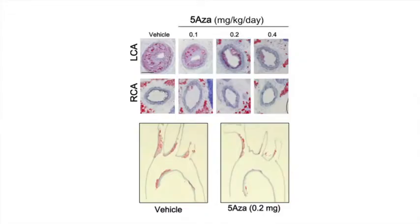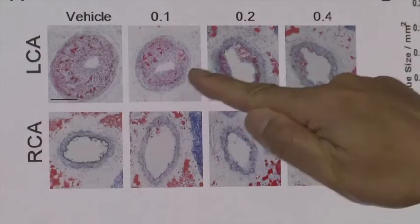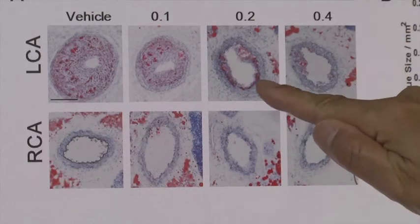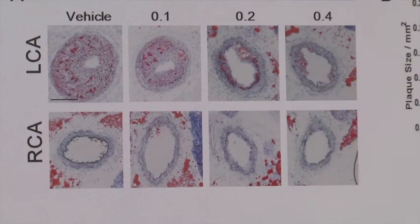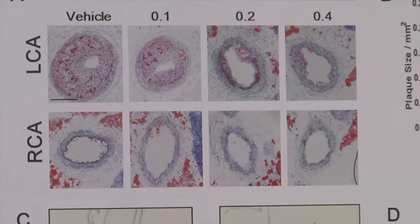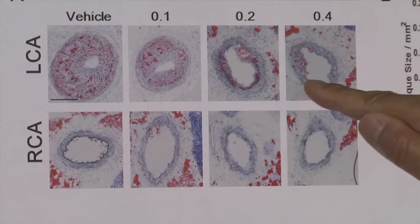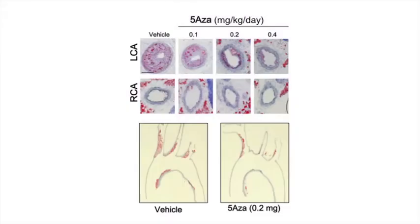We tested whether 5A, a drug that inhibits DNMT, can inhibit atherosclerosis. We first tested this in the partial ligation model, where control animals develop atherosclerosis. By treating with 5A in a dose-dependent manner, we demonstrated that atherosclerosis development is prevented.